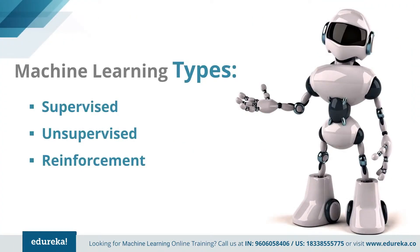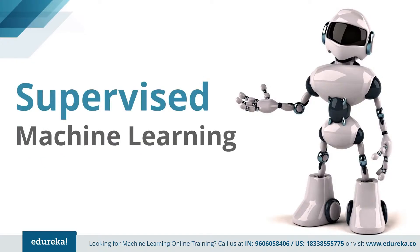Now let's subcategorize machine learning into three different types: supervised learning, unsupervised learning, and reinforcement learning. We'll see what each of them is, how they work, and how each is used in the fields of banking, healthcare, retail, and other domains. I'll make sure to use enough examples and implementations of all three to give you a proper understanding.